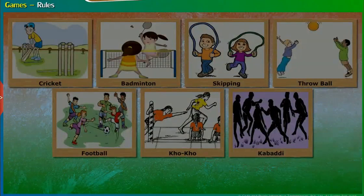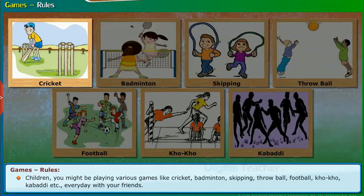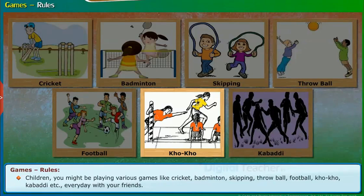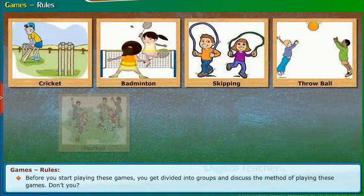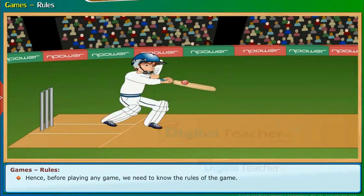Have you ever wondered why we need rules to play games? Let us now know the importance of rules. Children, you might be playing various games like cricket, badminton, skipping, throwball, football, cocoa, kabaddi, etc. every day with your friends. Before you start playing these games, you get divided into groups and discuss the method of playing these games. Hence, before playing any game, we need to know the rules of the game. Each game has certain rules which are to be followed.